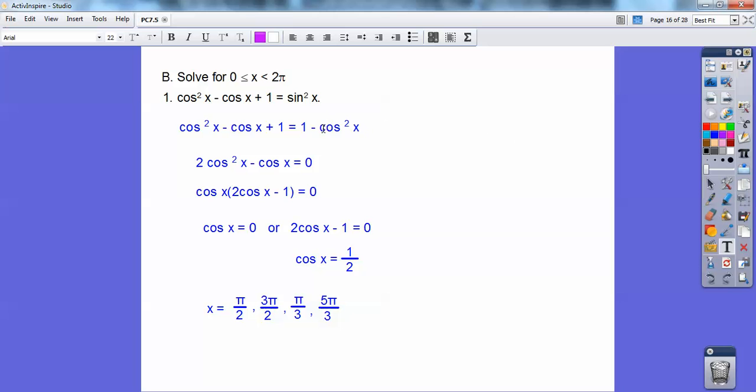So I'm going to go ahead and put in one minus cosine squared in for that sine squared right there. And then I'm going to add cosine squared with this cosine squared right here, and I get two cosine squared minus the cosine x. And then these ones, they cancel each other out because they're on different sides. So it equals zero. Then I can factor out a cosine x, the GCF it out, and then set those factors equal to zero.